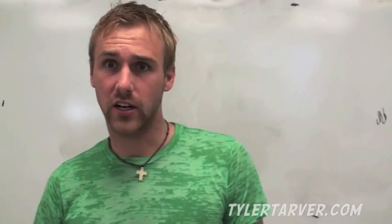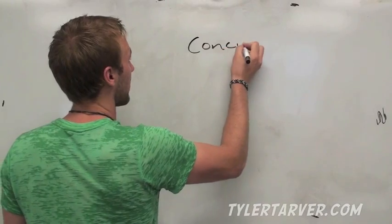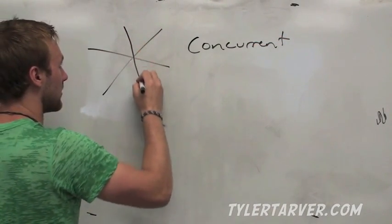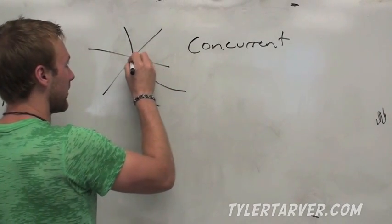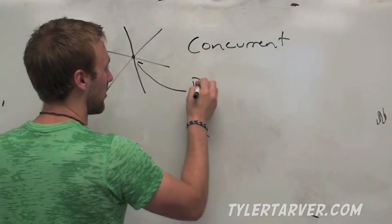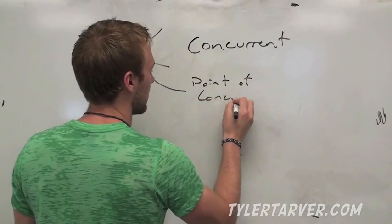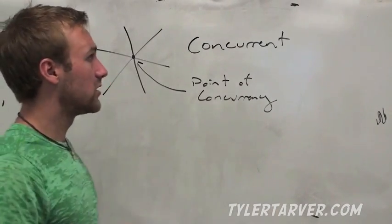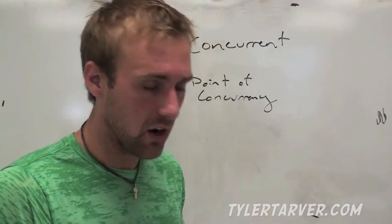All right, first word you need to know is concurrent. Concurrent means that three lines intersect. That makes them concurrent. Now, that point right there, that little spot where they all hit, is called the point of concurrency. I'm going to be using that term quite a bit, so it would be good to pay attention to that. So we've got concurrent and then point of concurrency.